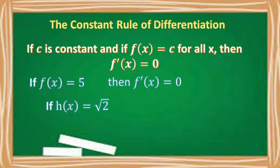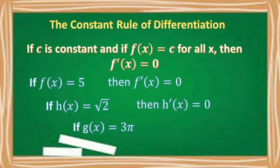If h of x is equal to the square root of 2, then h prime of x or its derivative is equal to 0. And if g of x is equal to 3π, then g prime of x or its derivative is equal to 0.